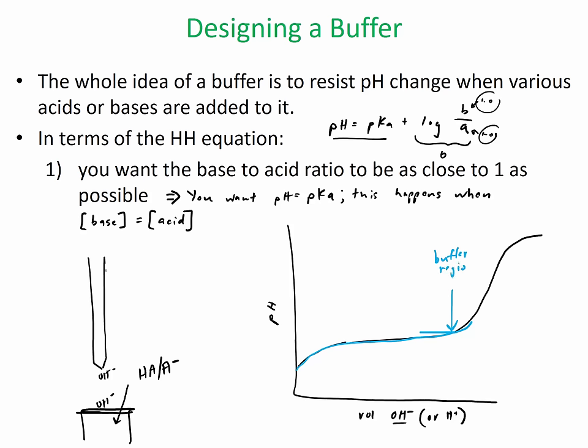During this buffer region, you can see that there's no change in y — so there's basically no slope right here. It's very, very small. During this whole time, you have both conjugates present.